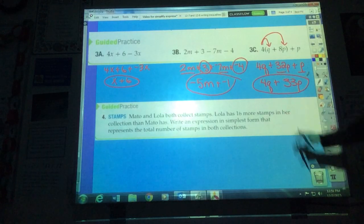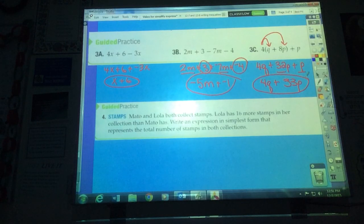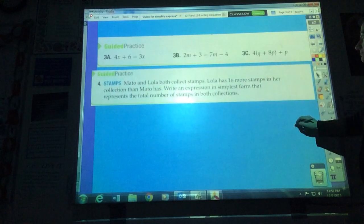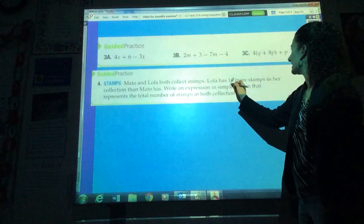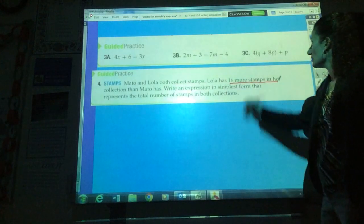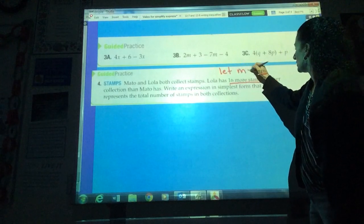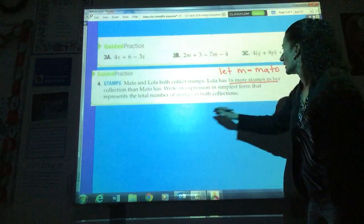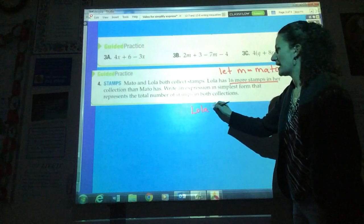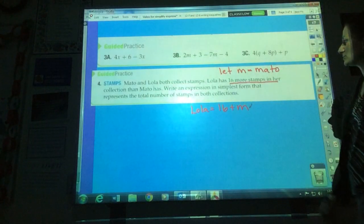Let's take a look at one more problem. It's the word problem here. Let's do this together. Meto and Lola both collect stamps. Lola has 16 more stamps in her collection than Meto has. Write an expression that represents the total number of stamps in both collections. In this case, I don't know how much Meto has and I don't know how many Lola has. But I do know that Lola has 16 more stamps than Meto. So if I were to let M equal the number Meto has, I could rewrite this for Lola. Well, I now know that Lola has 16 more than Meto. So that's an expression for Lola.